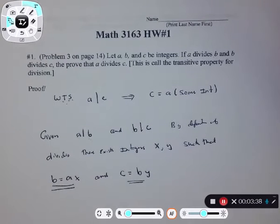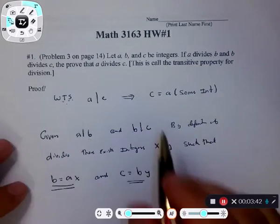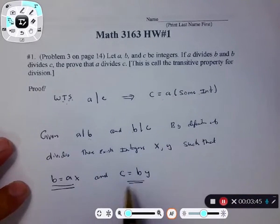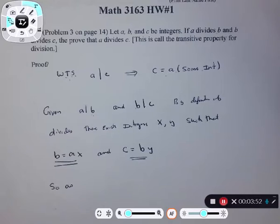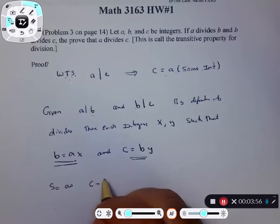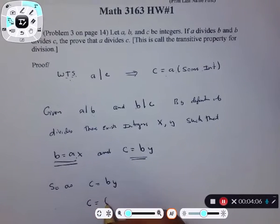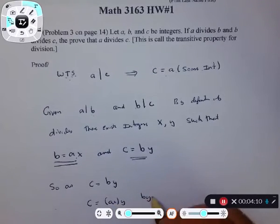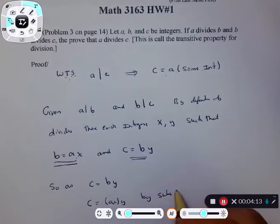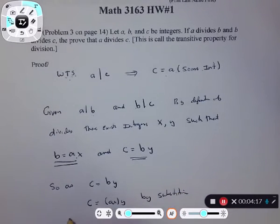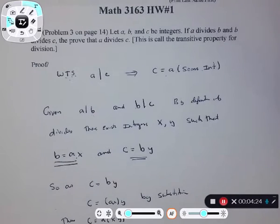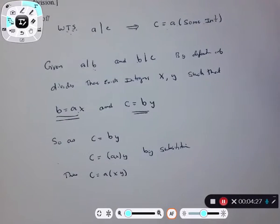Now I have two equations and what I want to show is c equals a times an integer. I have c equals b times y, but b equals ax, so I can substitute. So c equals ax times y, and by substitution thus c equals a times xy. I can move the parentheses around — that is by algebra, officially the associativity property.